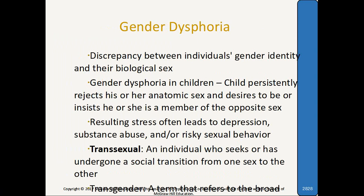The last disorder in this chapter is gender dysphoria, a new diagnosis in DSM-5. In previous versions of the DSM, gender dysphoria was separated out among several different disorders. It refers to a discrepancy between an individual's gender identity — their sense of being male or female — and their biological sex. In children, the child may persistently reject their anatomical sex and desire or insist upon being a member of the opposite sex. Gender dysphoria can result in significant stress in both children and adults, and can lead to depression, substance abuse, and other risky sexual behavior.